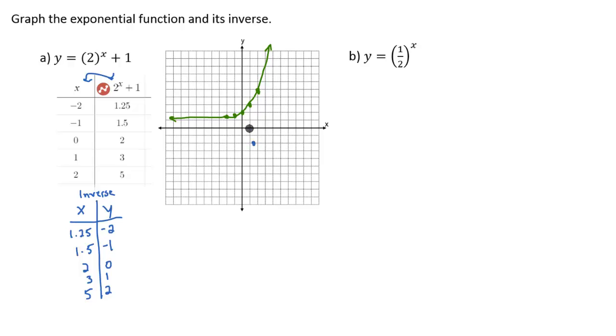So I'm going to plot these points now. So I have x equal 1.25, negative 2, it's going to be somewhere right around here. 1.5, negative 1 is going to be right around here. 2, 0 is going to be right there. 3, 1 here. And then 5, 1, 2, 3, 4, 5, 2. All right, so there's all my points.